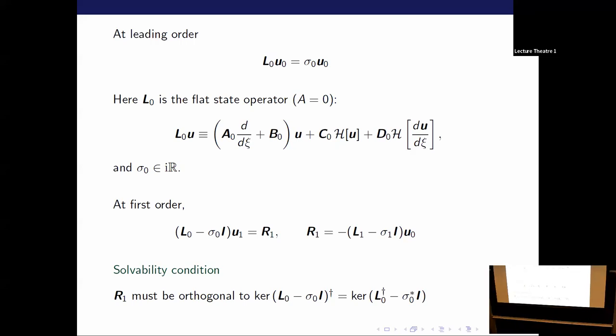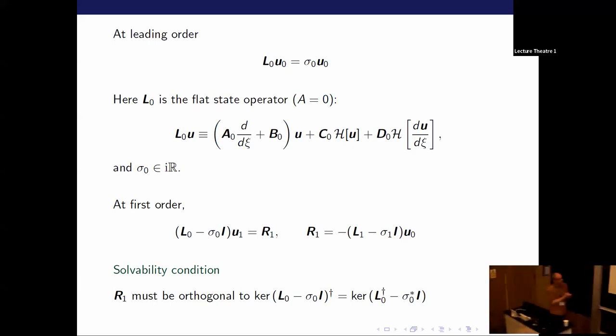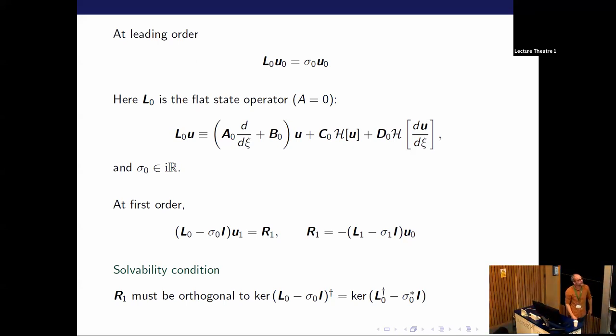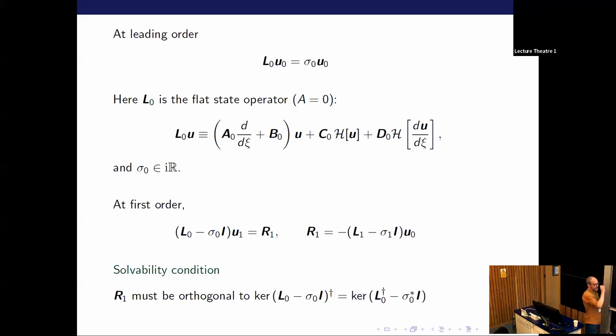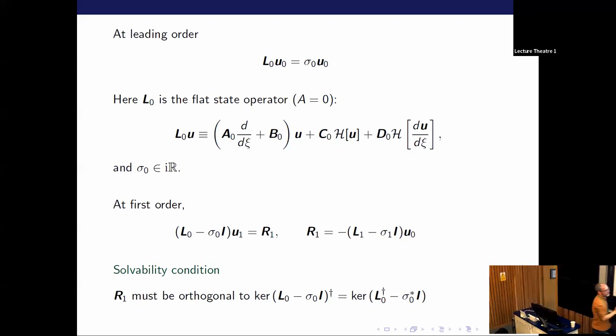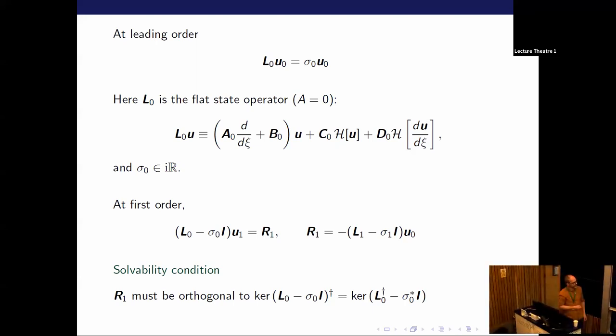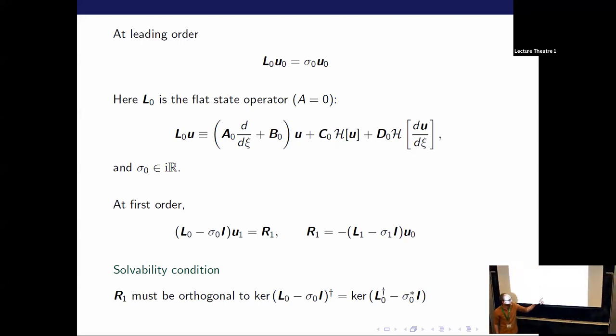Plug those expansions into the stability problem. At leading order, you get what you expect. L nought is the leading order operator, effectively for the flat state. In essence, what I've talked about already, and sigma nought, as I said, is on the imaginary axis. So of interest is what happens at first order. You go to first order and you get this problem to solve, so this is now a forced version of the leading order problem. You get the zeroth order operator on the left-hand side, sigma nought being purely imaginary, with some forcing on the right-hand side, which comes from the first order part of the operator acting on the leading order eigenvector. Fredholm's alternative tells me that there's a solution to this problem as long as R1 is orthogonal to the kernel of the adjoint. So there's going to be a solvability condition on this. I need R1 to satisfy some criteria in order for there to be a solution given the multiplicity of sigma nought. That takes us to looking at the kernel, the null space of the leading order operator, the adjoint of that.